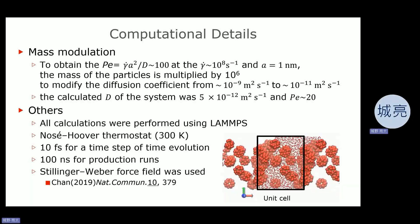The other computational details are as follows. All calculations were performed using the LAMMPS software package. Nosé-Hoover thermostat was used for temperature control at 300 Kelvin. We used 10 femtoseconds for the time step of time evolution, and performed 100 nanoseconds for production runs. The pair potential was the Stillinger-Weber-type force field written in the cited article.